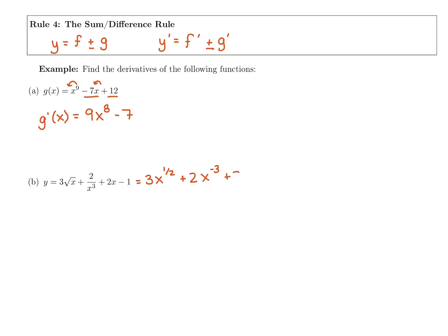Be super careful — don't take the derivative of the last two terms even though they don't need to be rewritten. We're going to rewrite the whole thing and then take the derivative of the whole thing. Now that everything's rewritten, we're going to take the derivative of each term normally. I'll bring down that power: three times one half gives me three halves.